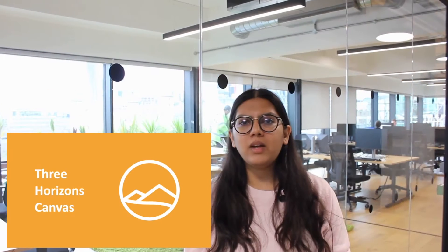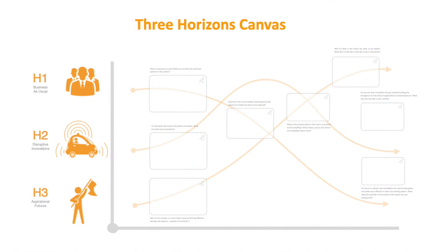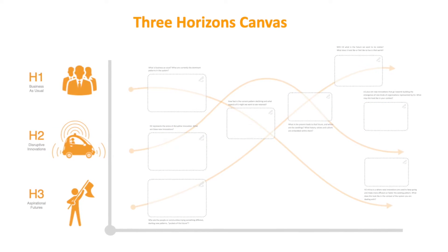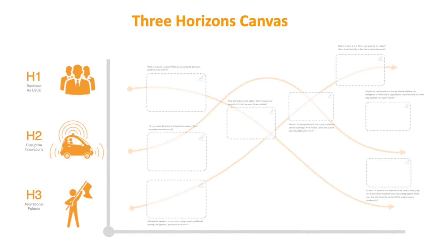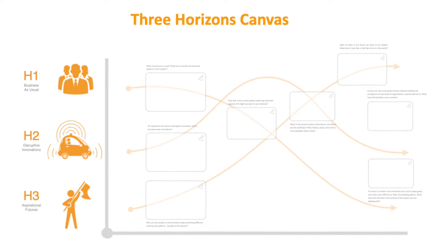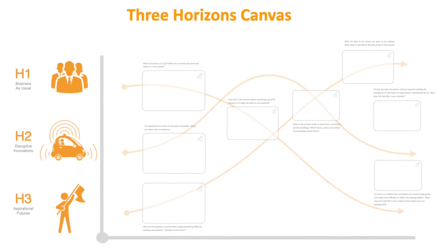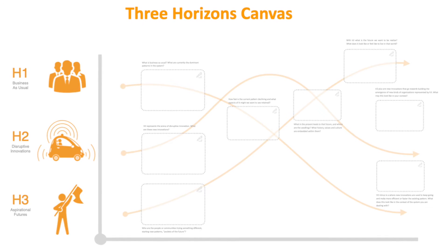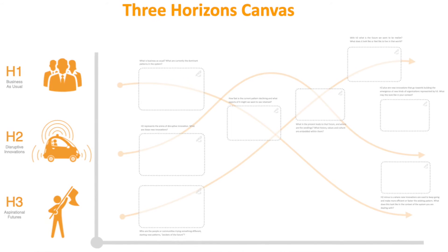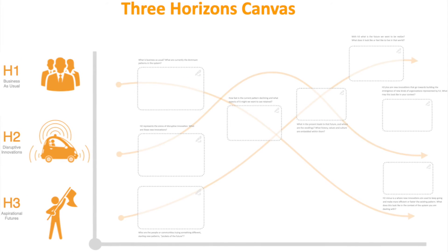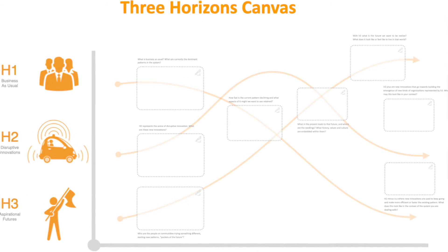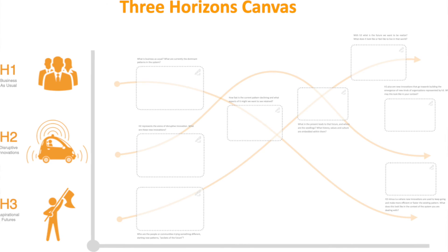Coming back to the next session which is around Three Horizons Framework — this framework is designed to aid your thinking around how a transition process may evolve by looking at the driving forces of innovation, the pockets of future, the decline of the incumbents, and how these changes may interact with each other to develop a new paradigm in systems change.